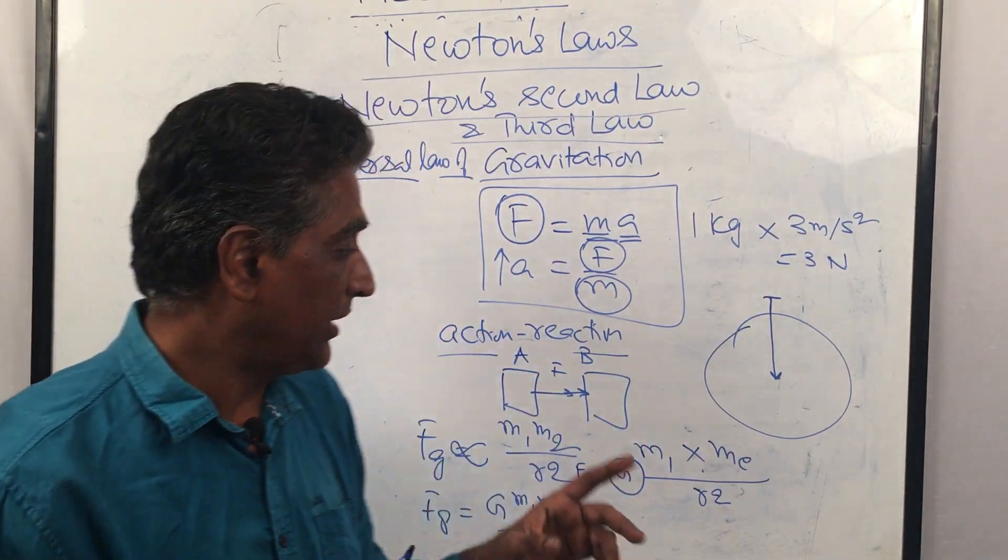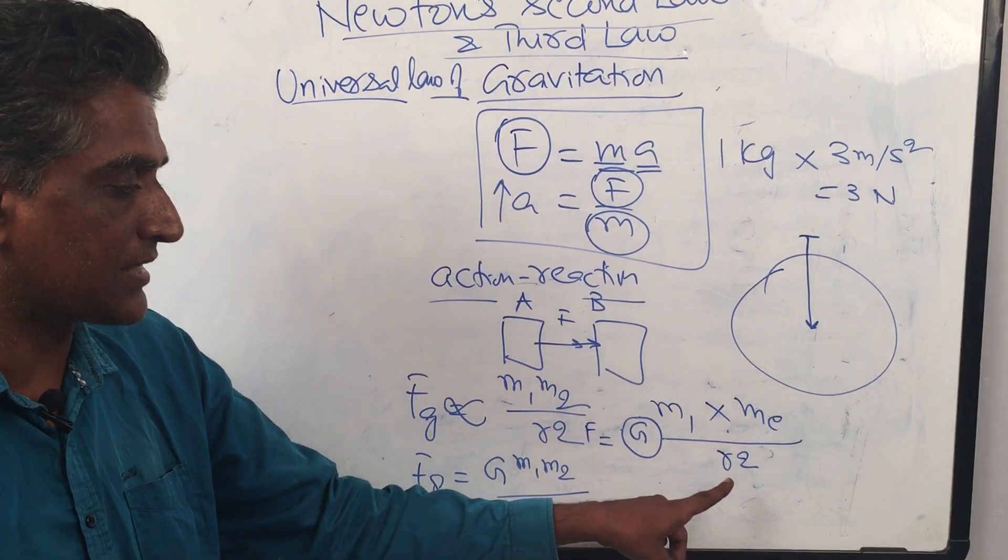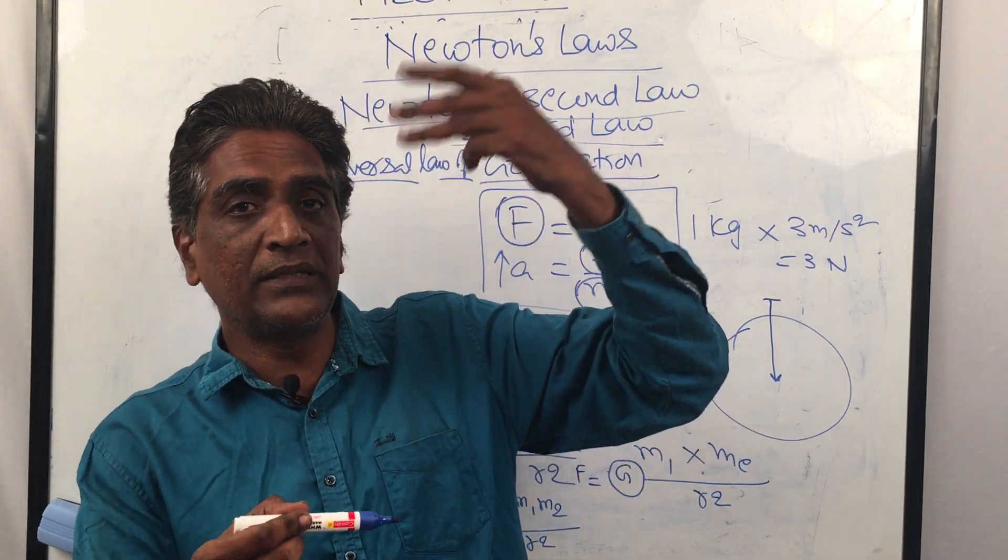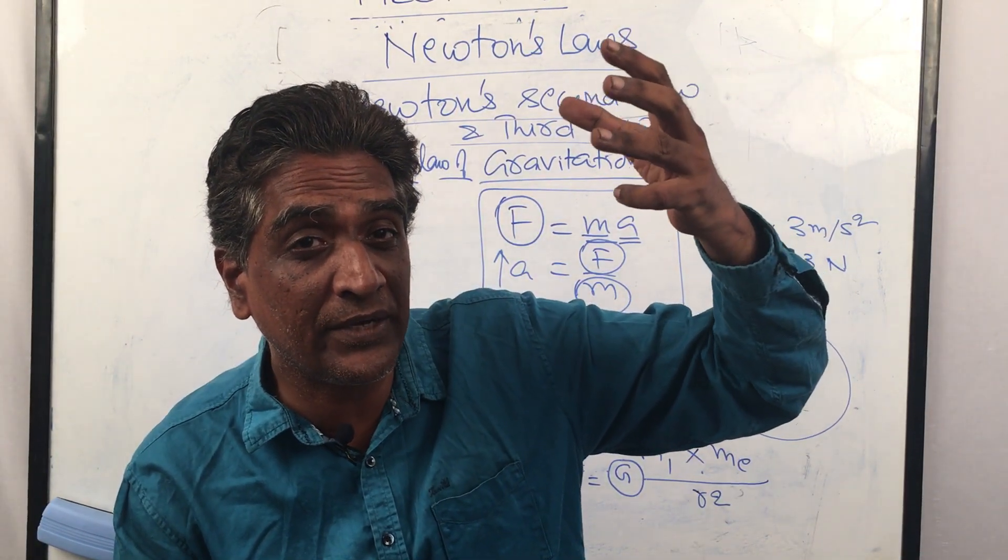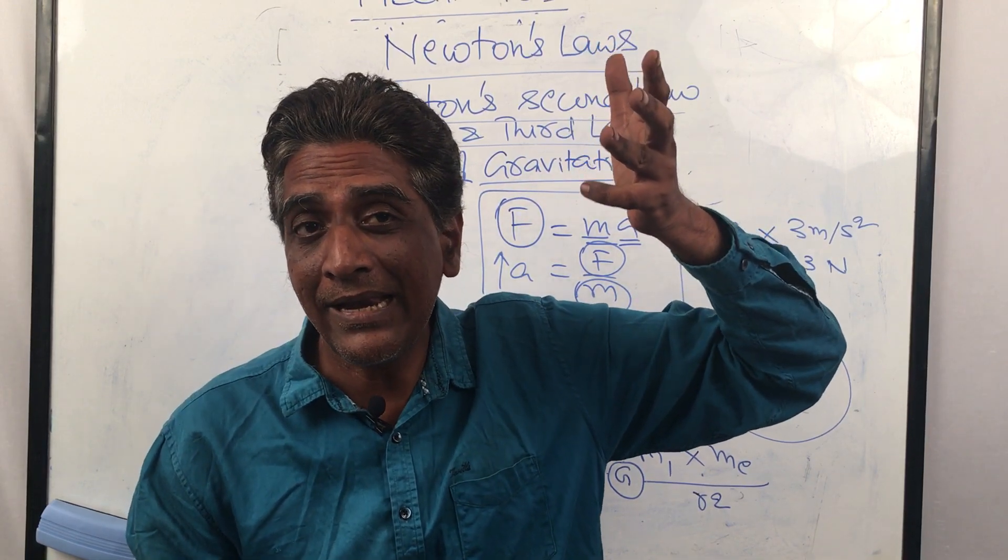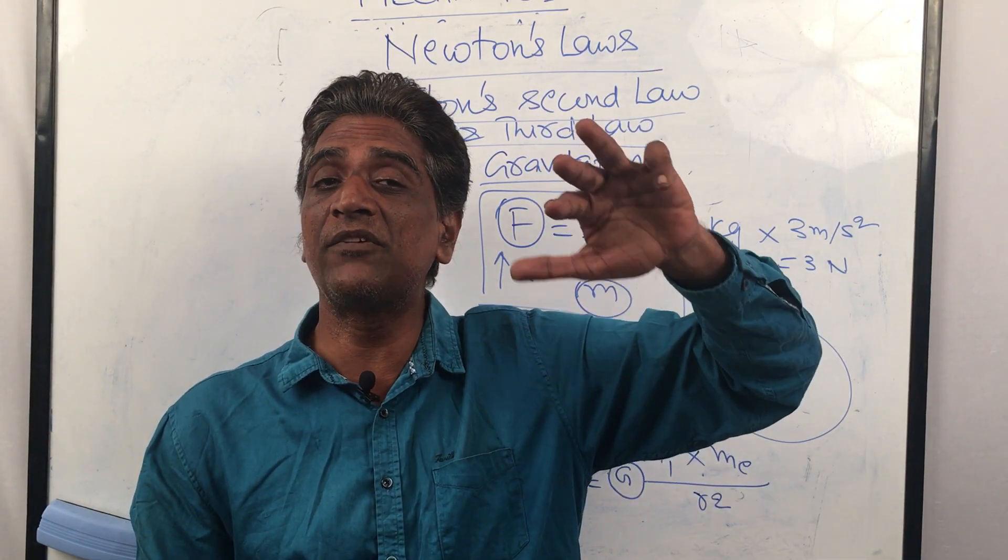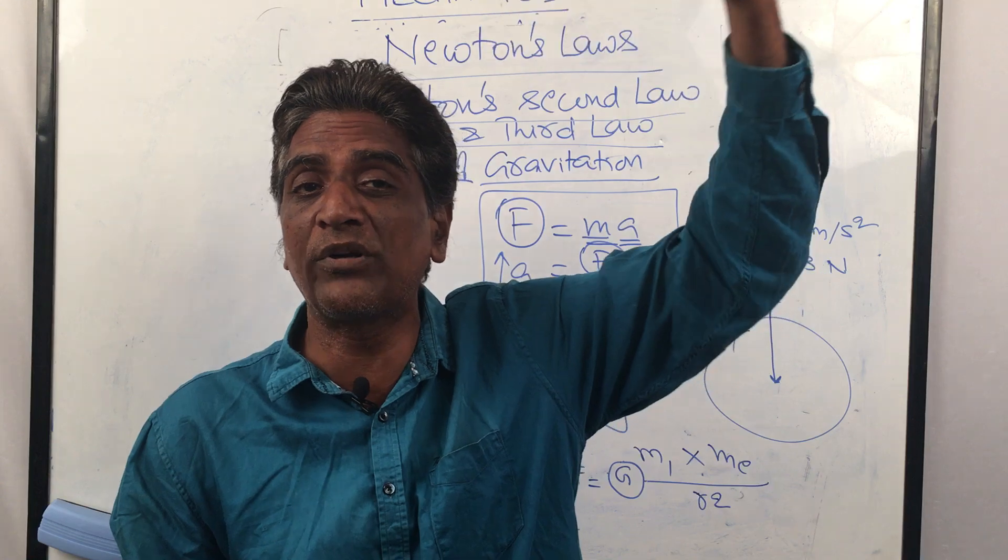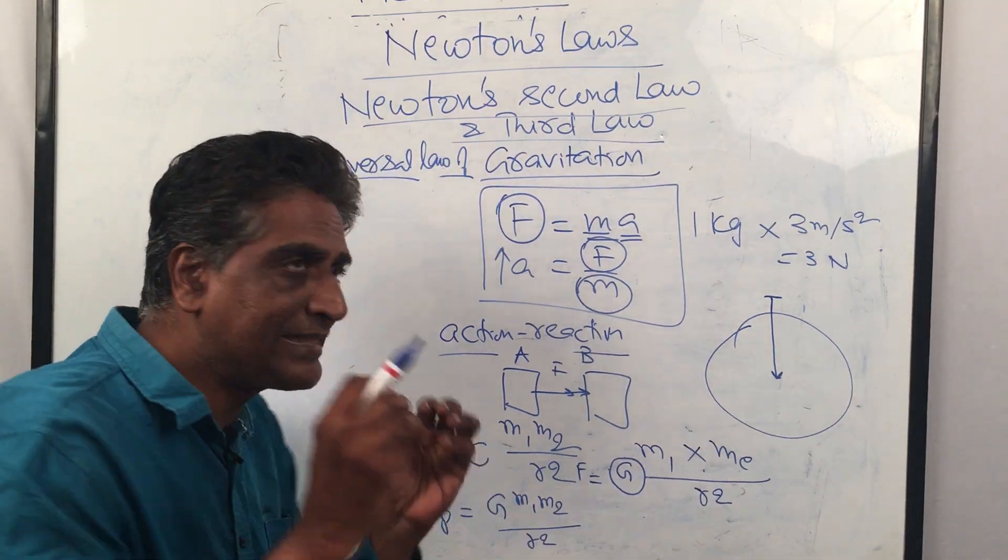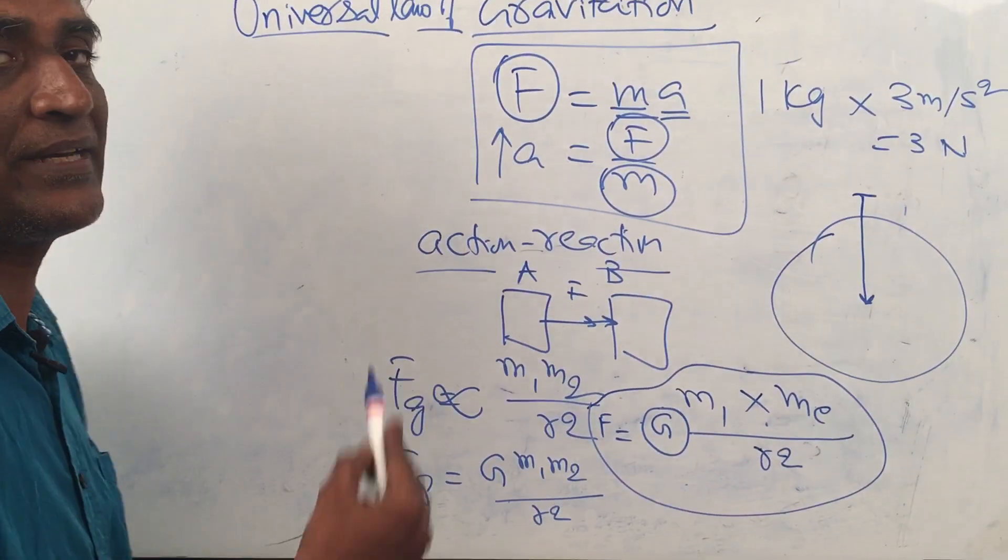The force of gravitation depends upon the first mass into the second mass divided by R square. If I take this body double the distance from the Earth, the force on it will reduce by 4 times. R square. If I triple the distance, the force on it will reduce by 9 times. If I increase the distance by 4 times, then the force will reduce by 16 times. It goes on reducing. This is how gravitation works.